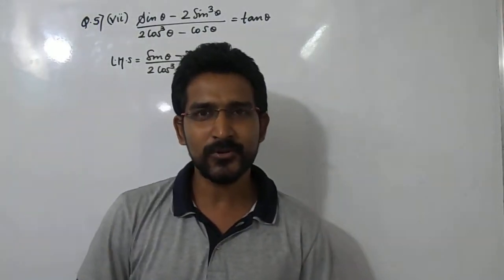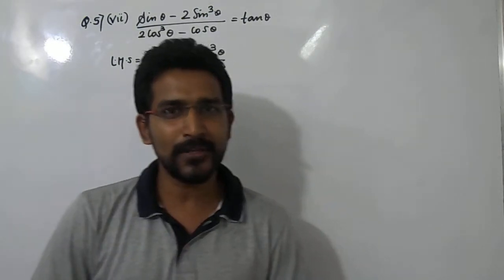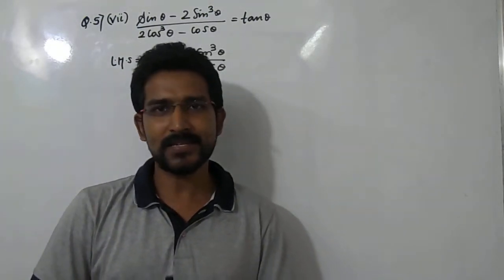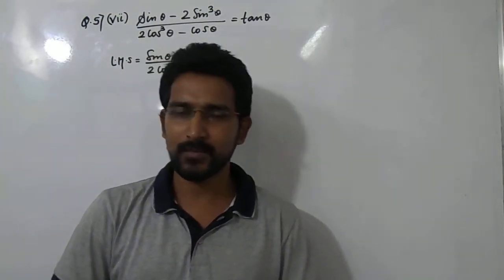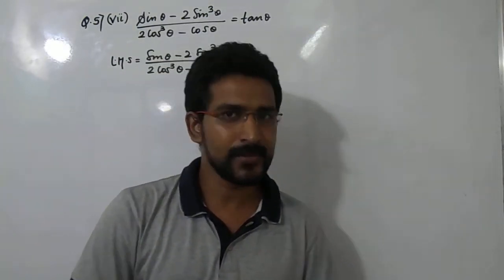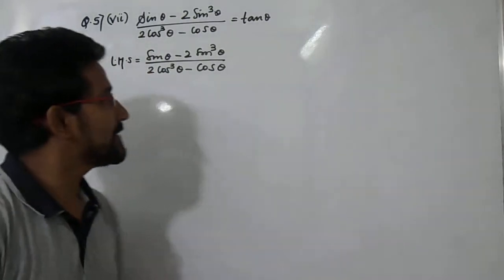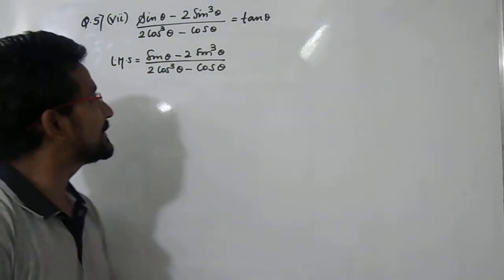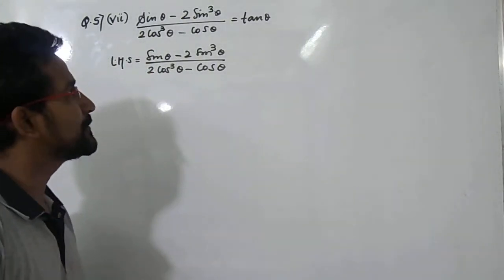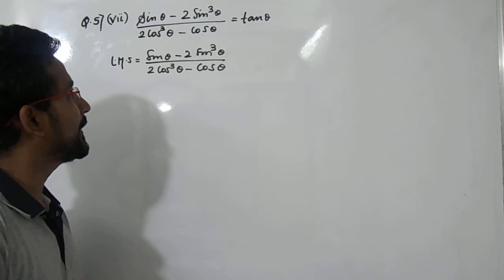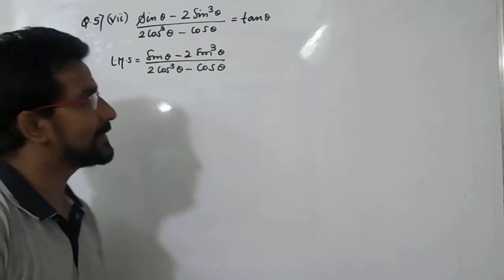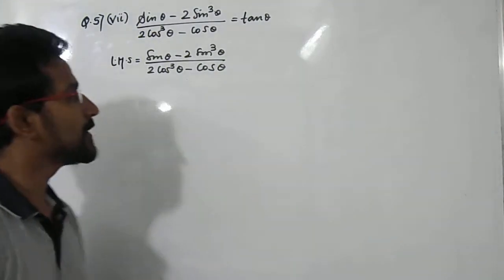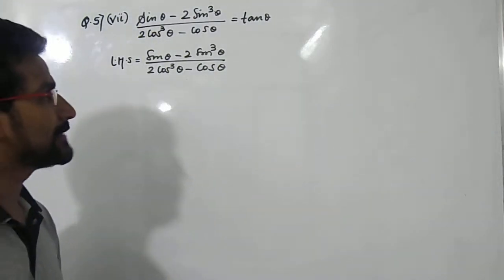Hello, so today in this session we are going to see the next sum, that is sub-question 7 of question number 5. In this we have to prove an identity that sin θ minus 2 sin³θ divided by 2 cos³θ minus cos θ is equal to tan θ.